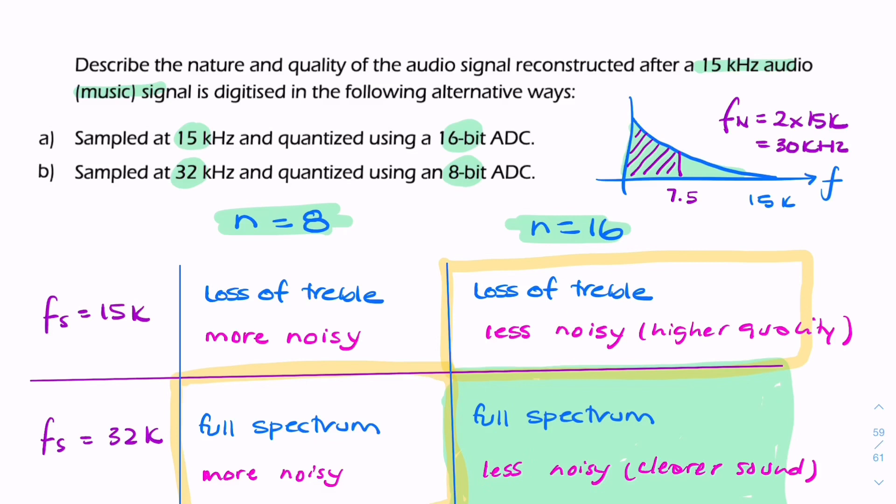What we're allowed to compare is one option versus the other. Given the choice, would we lose the treble and get high quality data, or get the full spectrum of audio but a little bit more noise? It depends what we're after. For music, you wouldn't want to lose the treble. But for speech, you probably wouldn't be as interested in the treble - you'd want higher quality or less noise.